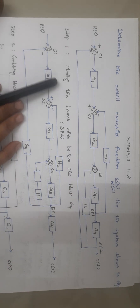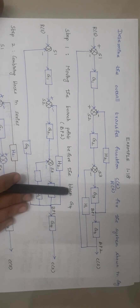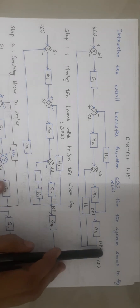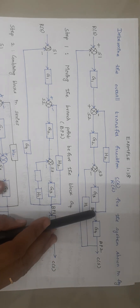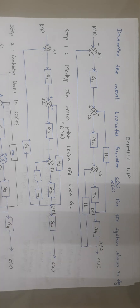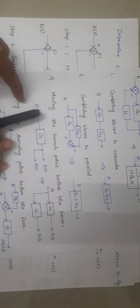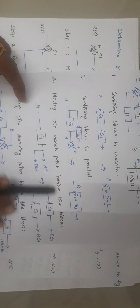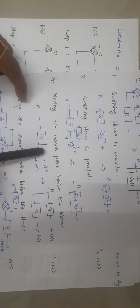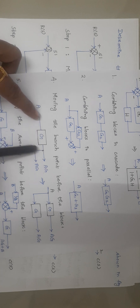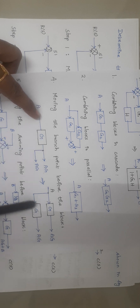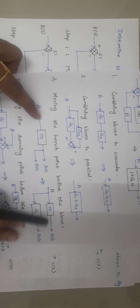The first step is moving the branch point before the block G4. The rule for moving a branch point before a block is rule number 4: whenever a branch point is moved before a block, we have to include the element G to the branch which we are moving.